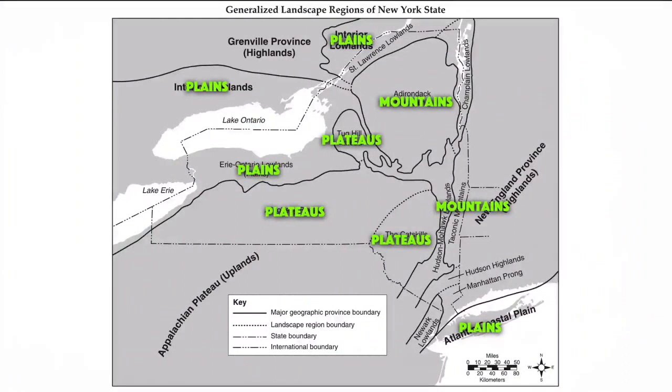Although this is not a relief map, this is page two of your Earth Science reference table. This is a landscape map of New York State. This map displays the different kinds of landscapes across the state, as well as the borders between these features.